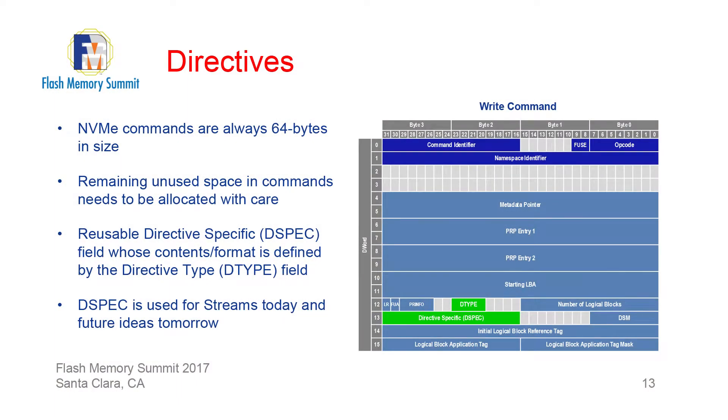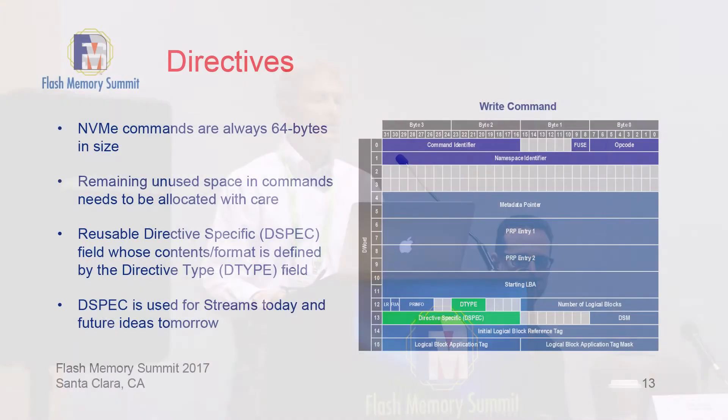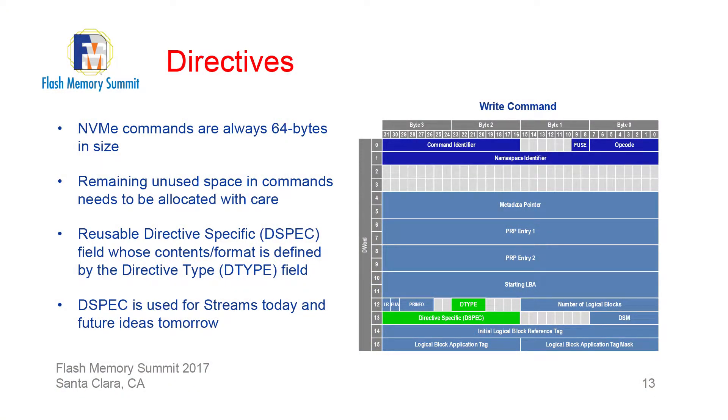Now let's shift gears to directives. Passing information from the host to a drive can allow the drive to perform better — one example is the deallocate function in dataset management, known in other standards as TRIM. NVMe commands are 64 bits in size, so we've always had to parcel out bits very judiciously. With directives, we've defined a 16-bit directive-specific field and a 4-bit directive type field that we can redefine based on the type of directive, allowing us to evolve and provide more information from the host to the drive to improve performance.